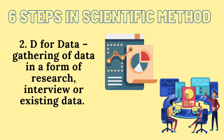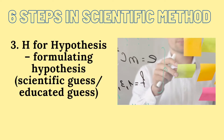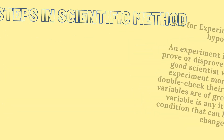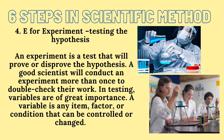D is for data — gathering of data in a form of research, interview, or existing data. H is for hypothesis — formulating a hypothesis, which is a scientific or educated guess. E is for experiment, or testing the hypothesis. An experiment is a test that will prove or disprove the hypothesis. A good scientist will conduct an experiment more than once to double-check their work.